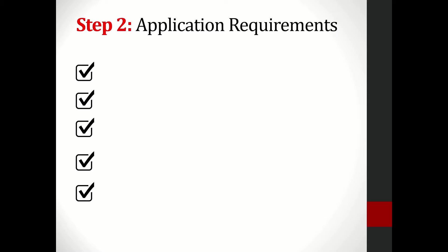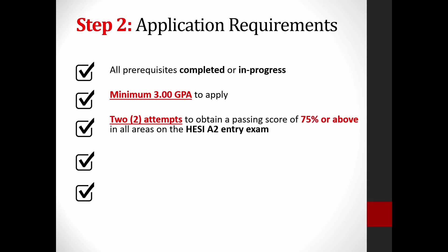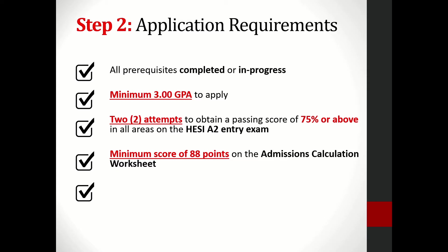The application requirements for the School of Nursing are as follows: all prerequisites must be completed or in progress; you'll need a minimum 3.0 GPA to apply — a GPA of 2.99 is not acceptable; a passing score of 75% within two attempts on the HESI entrance exam; a minimum score of 88 points on the calculation worksheet; and you have up to four attempts to apply to the full BSN program.